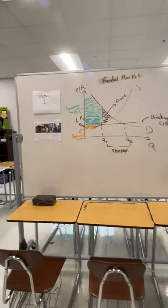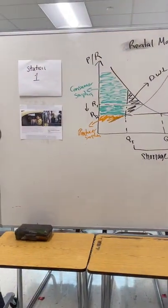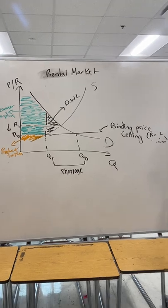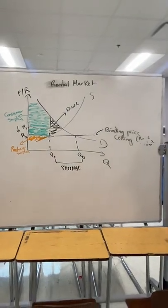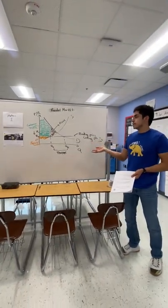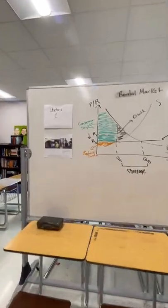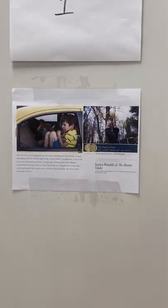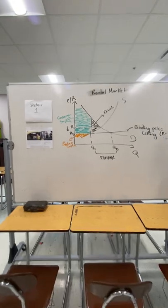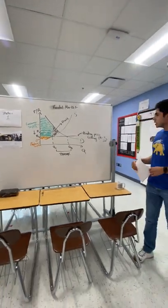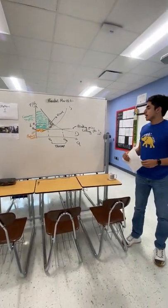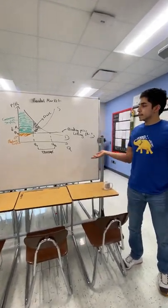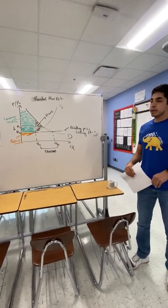The first graphical model we have is a simple supply and demand model for a rental market, and we're intervening by putting a binding price ceiling — so this is rent control. The social problem associated with this is predictably the affordable housing crisis. Next to each gallery walk station I have an interesting picture designed to provoke your thinking and to see how these graphs relate to reality. You're going to need to know the social welfare implications of the binding price ceiling, and one typical example is rent control policies.